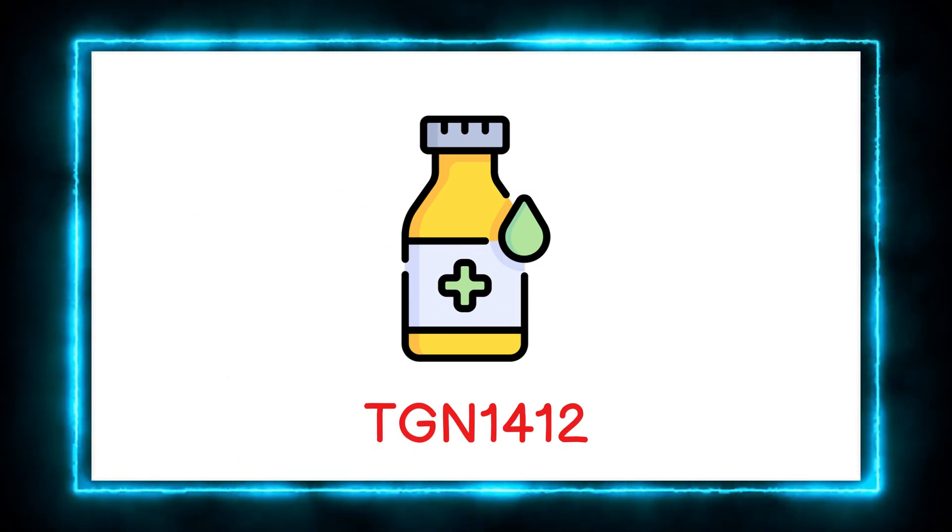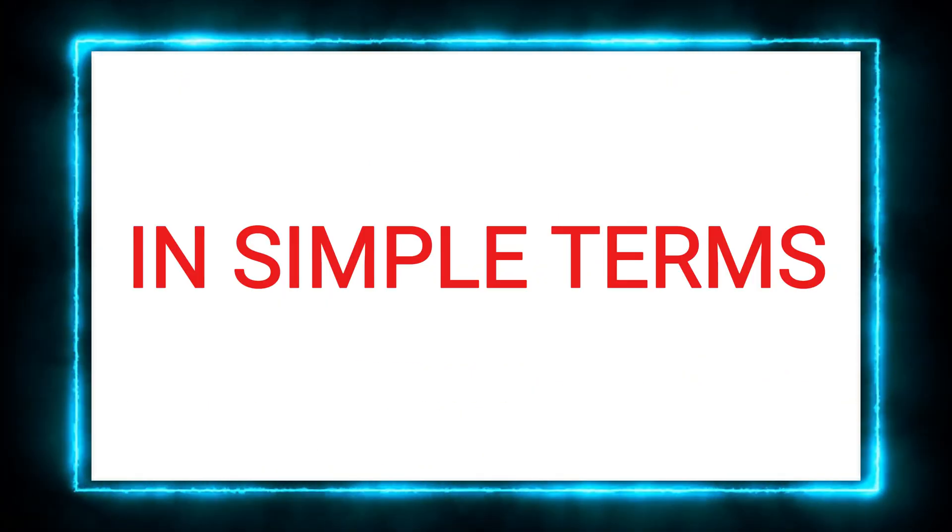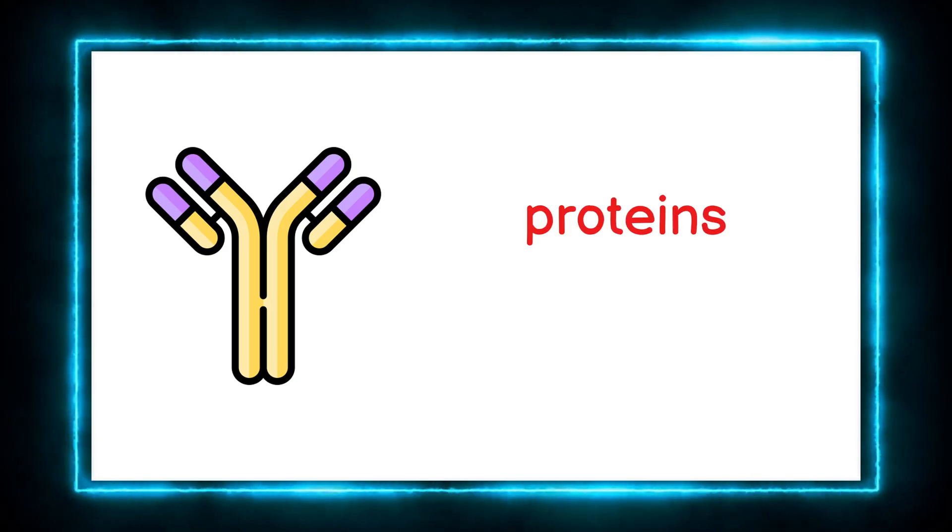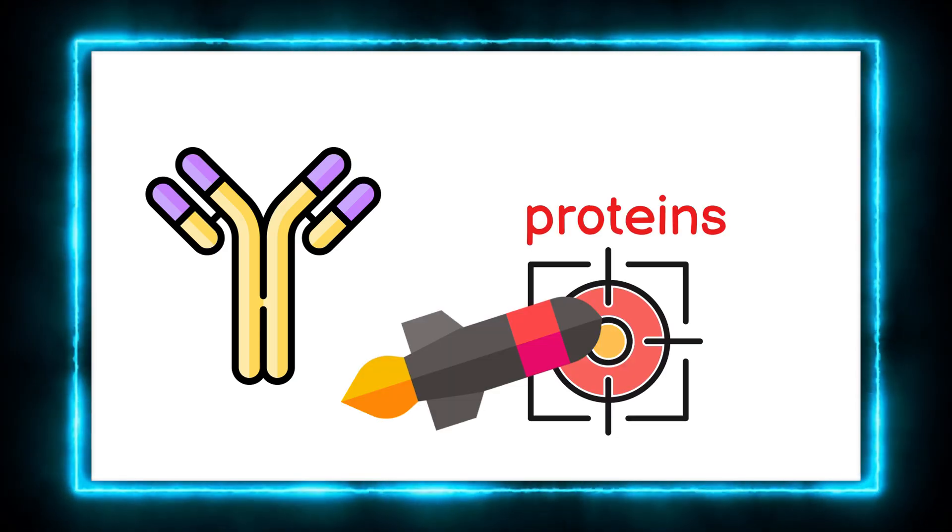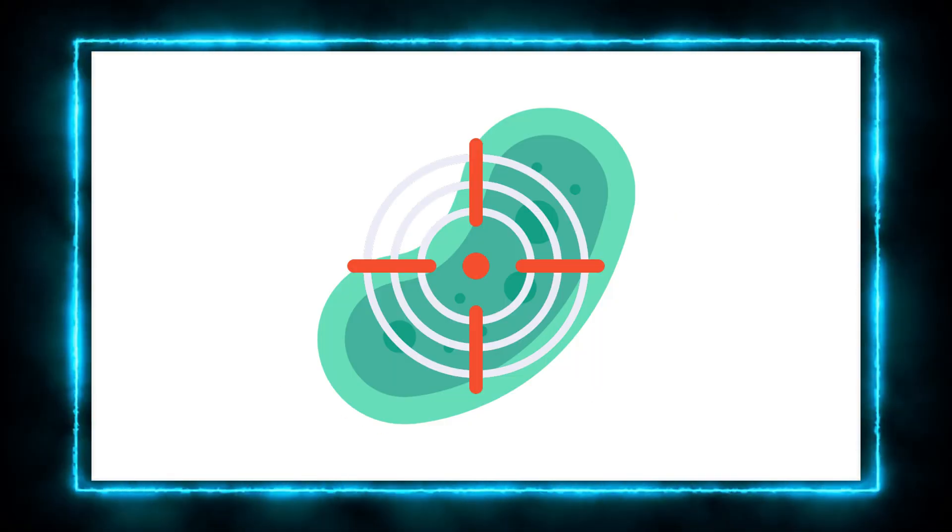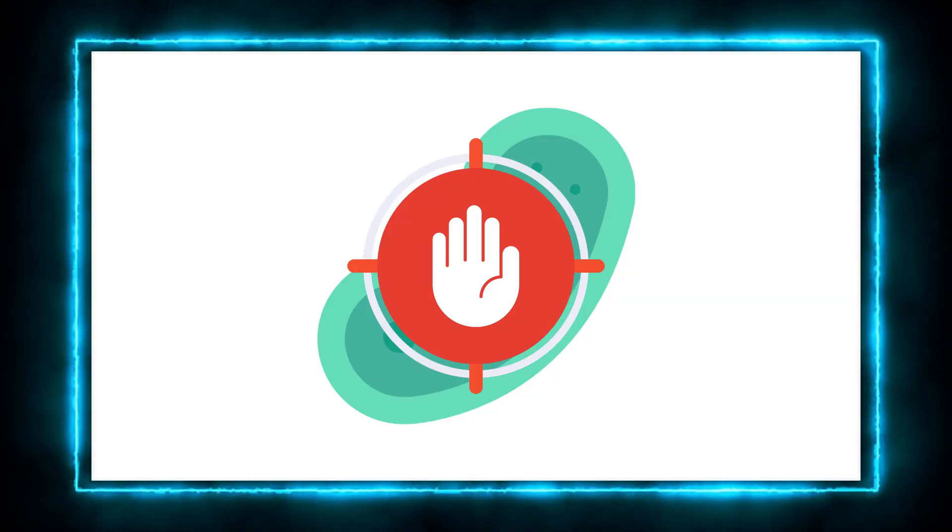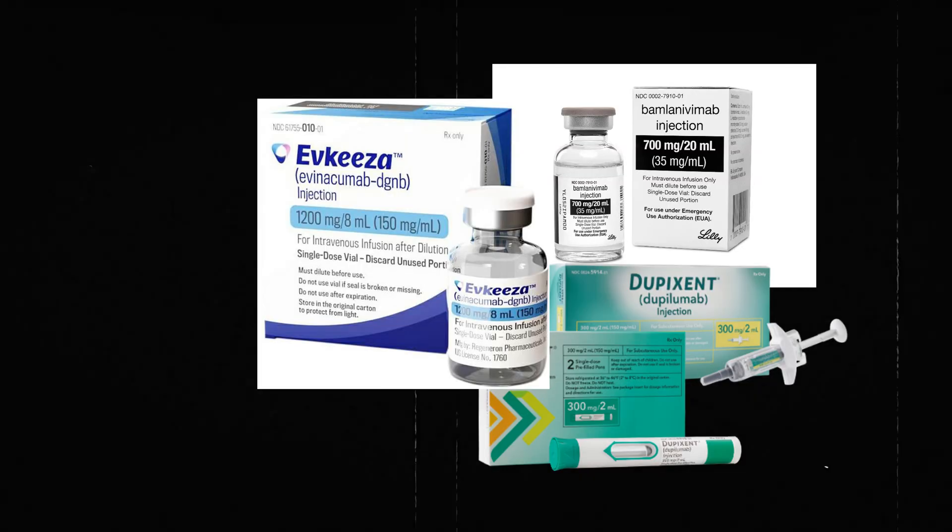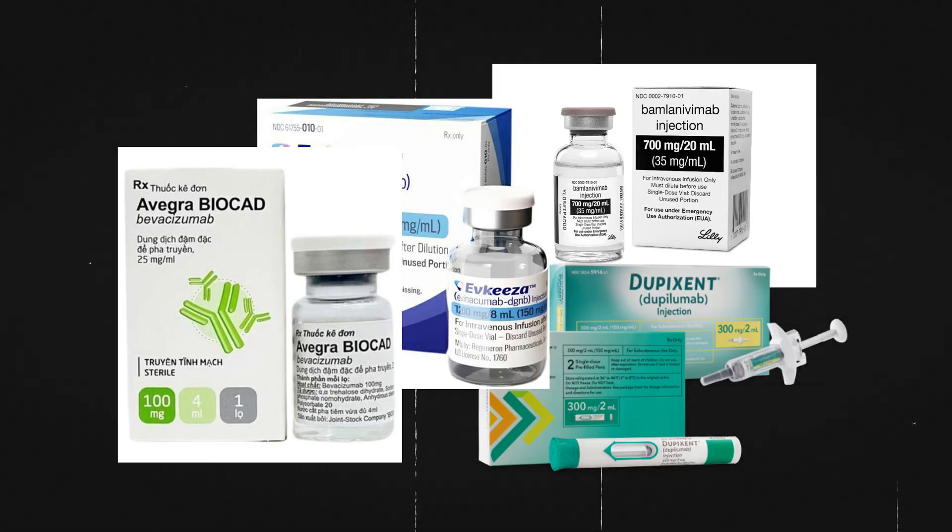TGN-1412 was an experimental drug, part of a class called monoclonal antibodies. In simple terms, monoclonal antibodies are proteins that act like precision-guided missiles. They locate a specific target in the body and either block it or activate it. These drugs have already been used to treat cancers, rheumatoid arthritis, and other serious conditions.